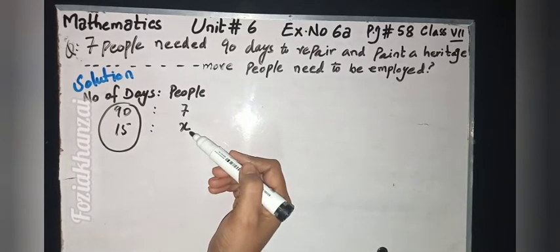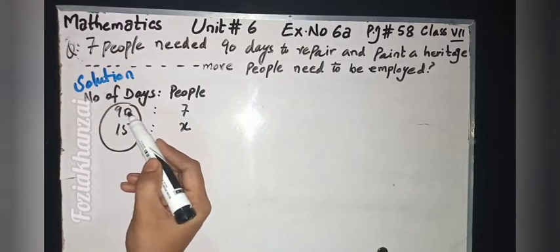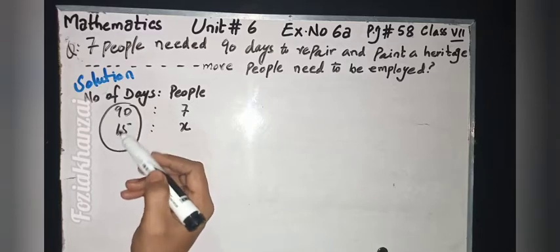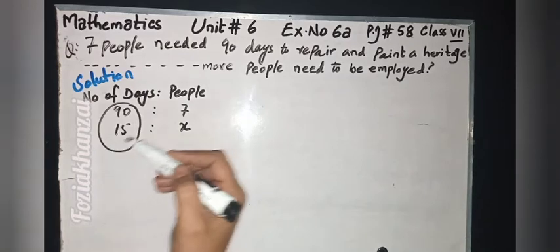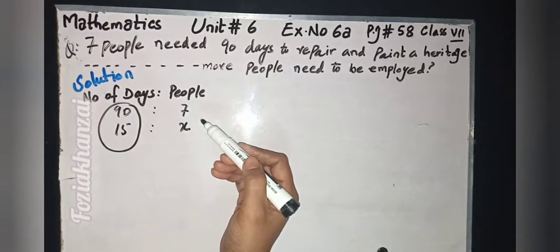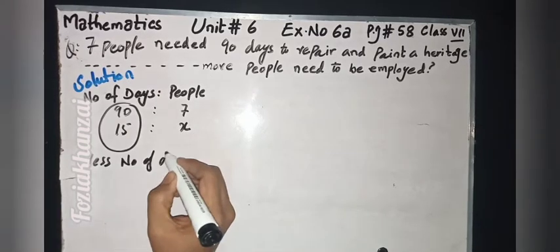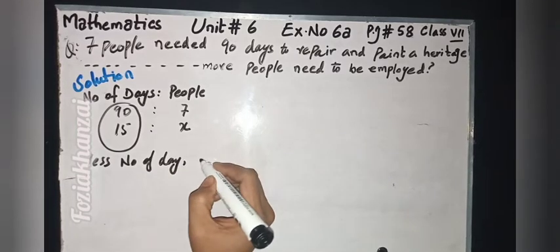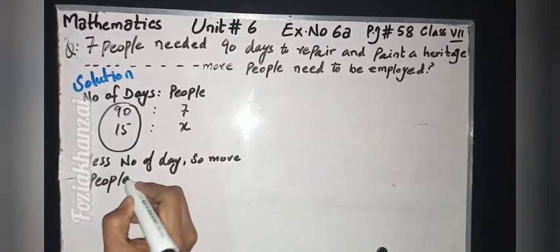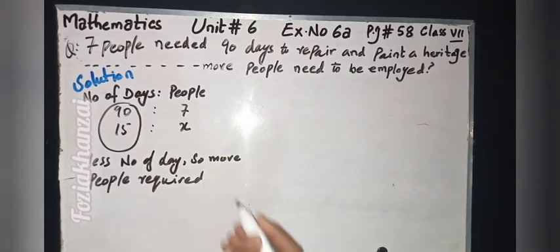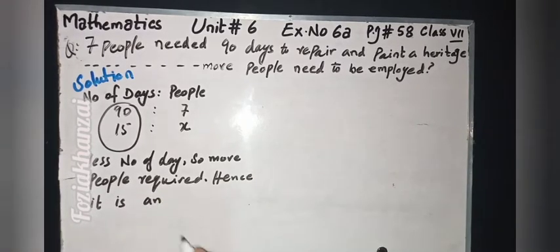Less number of days means more people are required to complete the job. One side is less, so the other side is more — hence it is an inverse proportion. Less number of days means more people required. Hence it is an inverse proportion.